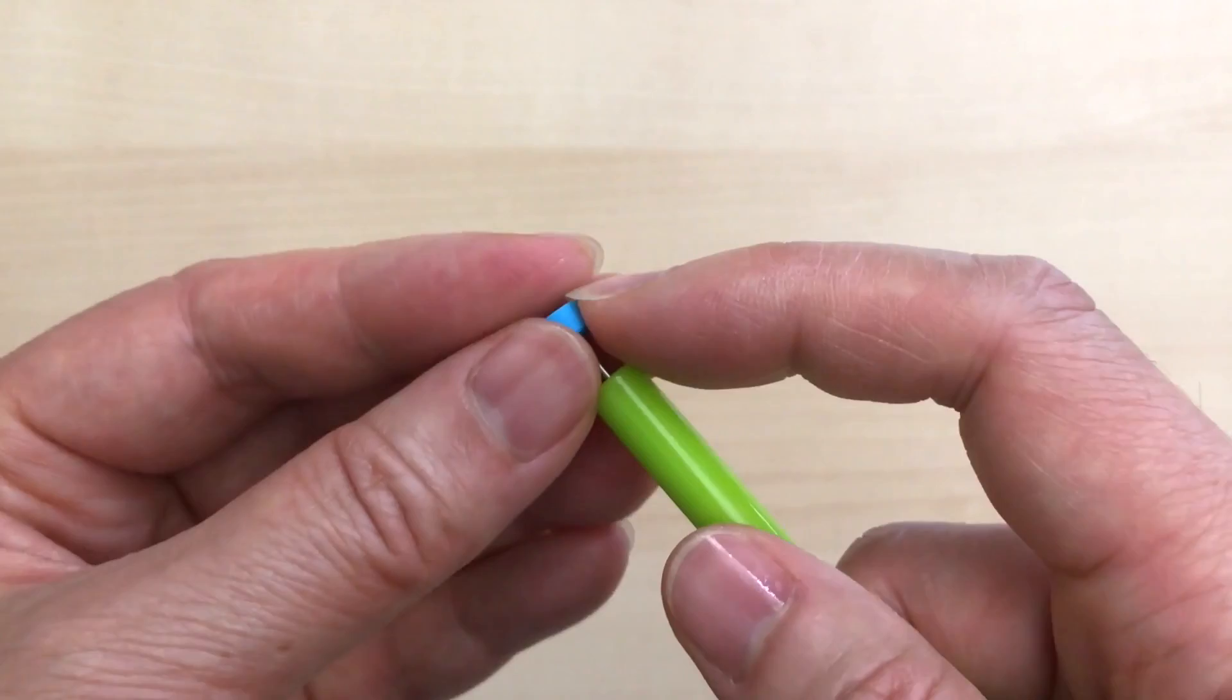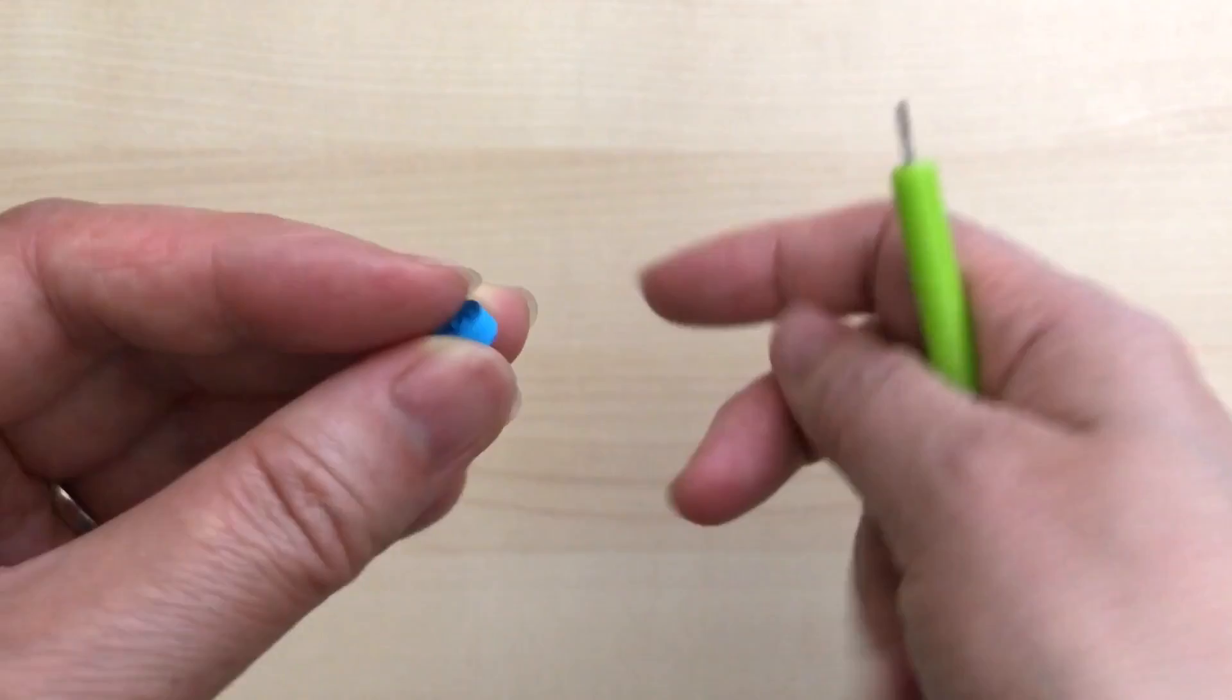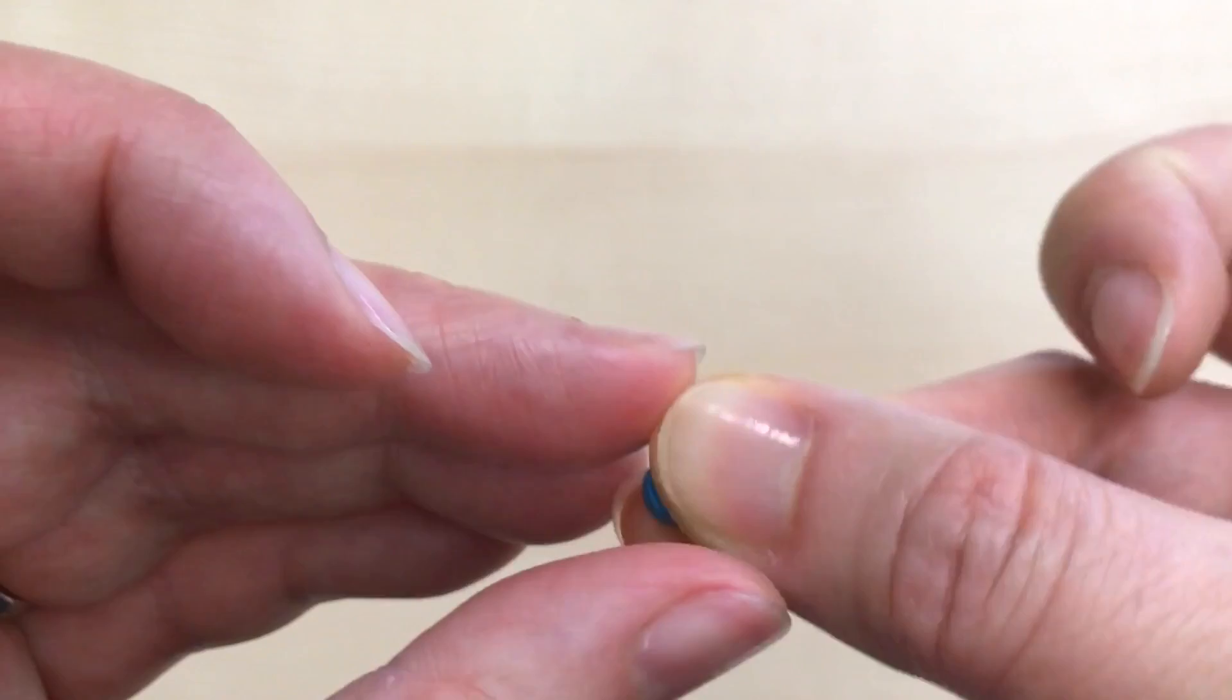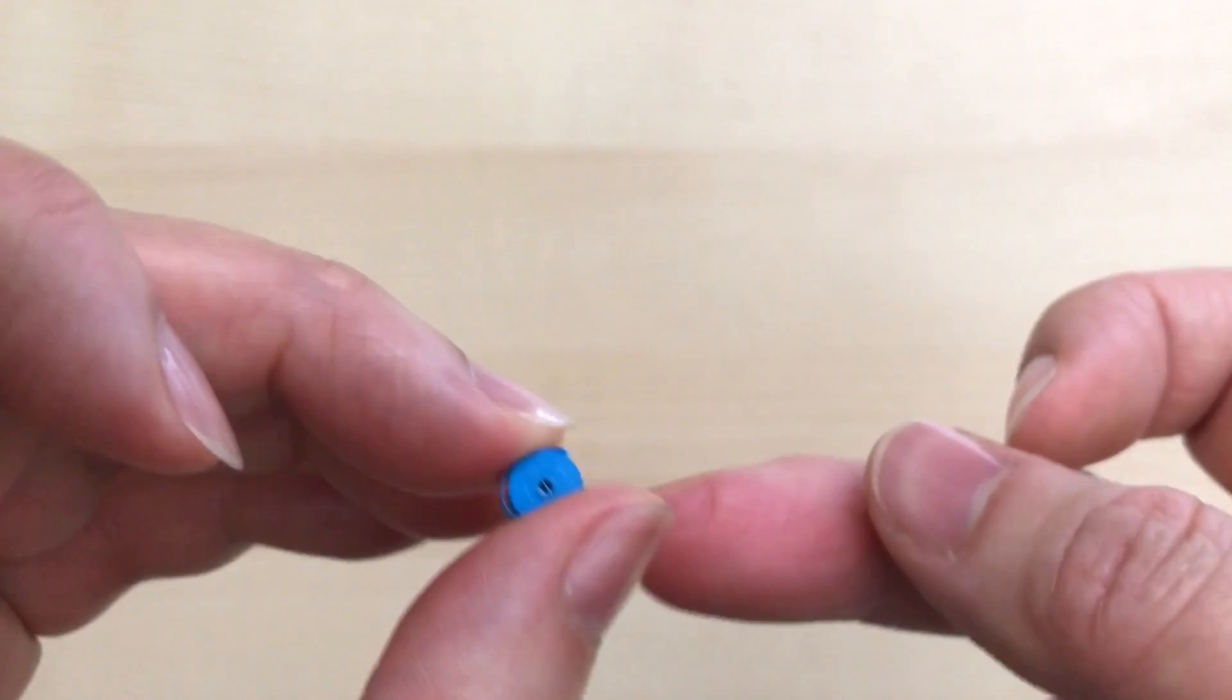I've got my coil here and if there's any uneven edges, I just tend to take a second to compress them with my fingers just to make sure that they're nice and straight and even.